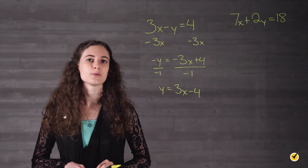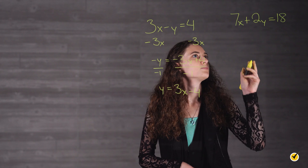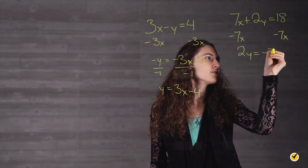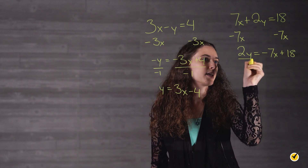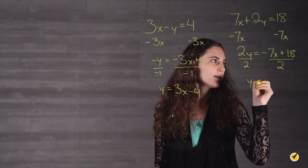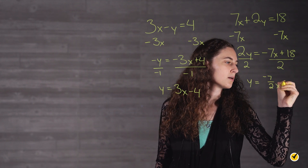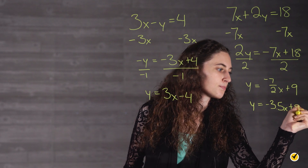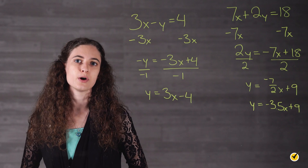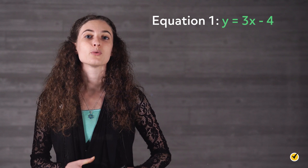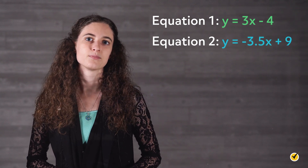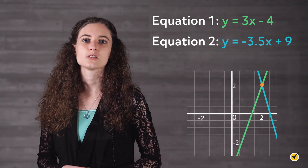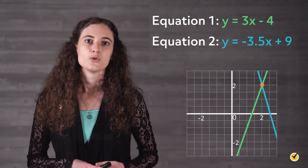Now let's isolate the variable y in the second equation. We subtract 7x from both sides, giving us 2y equals negative 7x plus 18, then divide both sides by 2. This leaves us with y equals negative 7 halves x plus 9, or equivalently y equals negative 3.5x plus 9. Now we have both equations in slope-intercept form: equation 1 is y equals 3x minus 4, and equation 2 is y equals negative 3.5x plus 9. We graph both lines and the system is solved when we identify the ordered pair where the lines intersect.